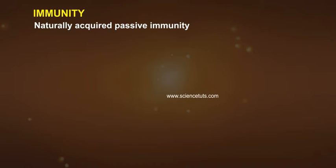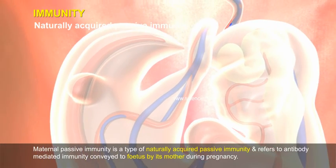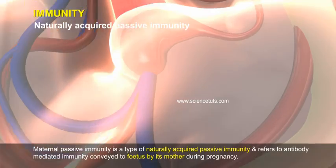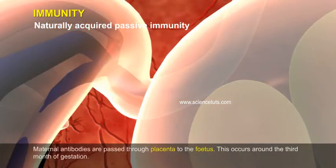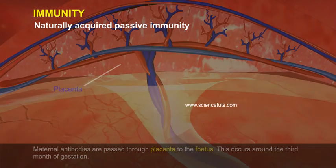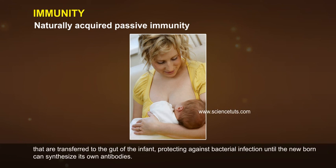Naturally acquired passive immunity refers to antibody-mediated immunity conveyed to the fetus by its mother during pregnancy. Maternal antibodies are passed through the placenta to the fetus, occurring around the third month of gestation. Passive immunity is also provided through the transfer of antibodies found in breast milk. The yellowish fluid called colostrum, secreted by the mother during initial days of lactation, has abundant antibodies that are transferred to the gut of the infant, protecting against bacterial infection until the newborn can synthesize its own antibodies.